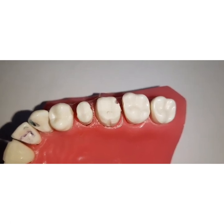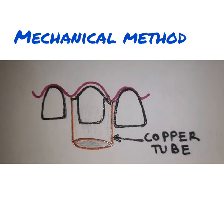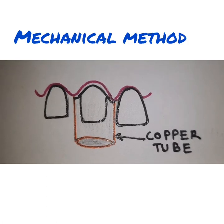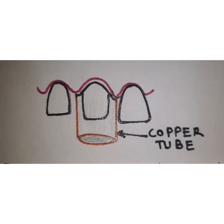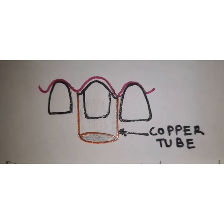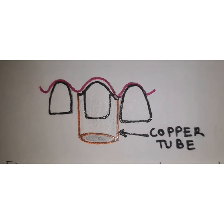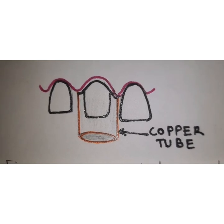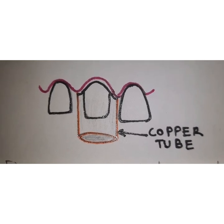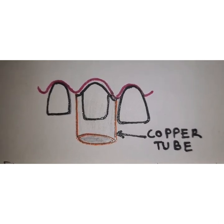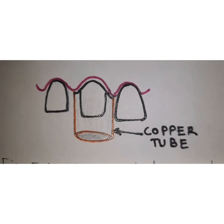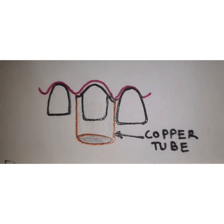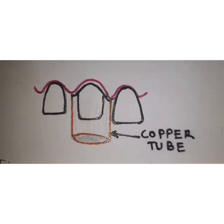The first is the mechanical method. In the mechanical method, the gingival tissue is physically displaced in order to ensure adequate reproduction of the prepared finish line. The most common mechanical methods used are copper tubes, plain cotton cords, or a rubber dam.